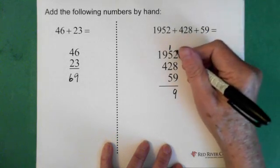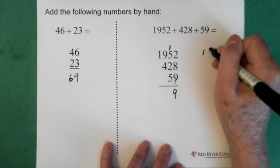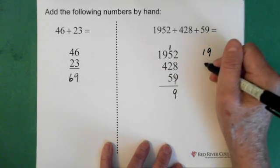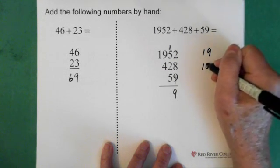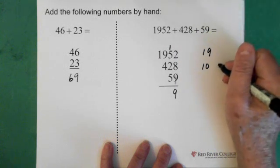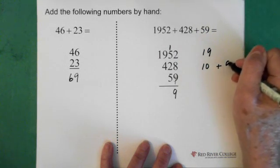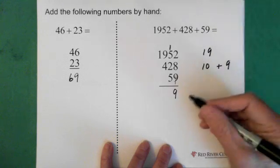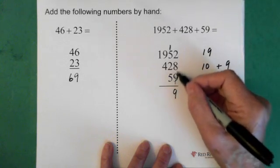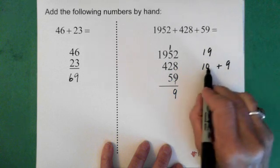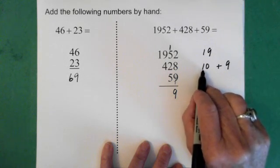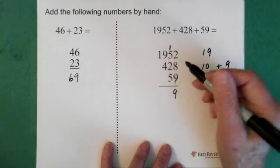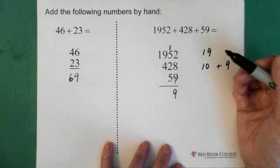So don't forget when we added these up, we ended up with 19. We can see that we have one 10 here, and 9 ones. That's what 19 is. So then the 9 goes down here in the ones position, and the 1 for the 10 goes up here in the tens position. So we have to add it to this line.